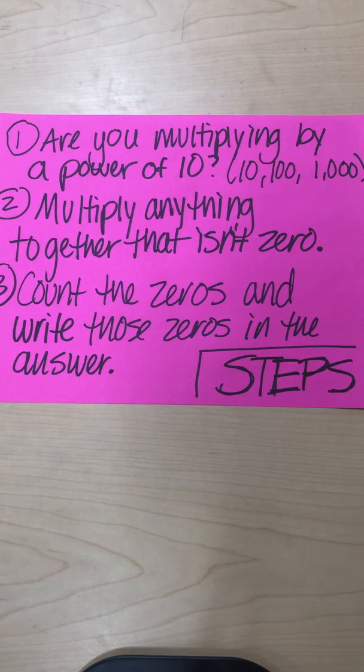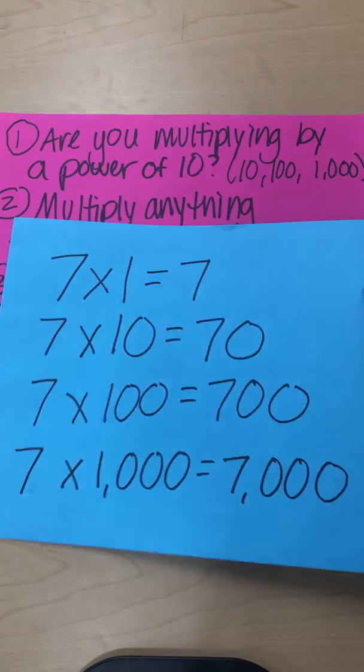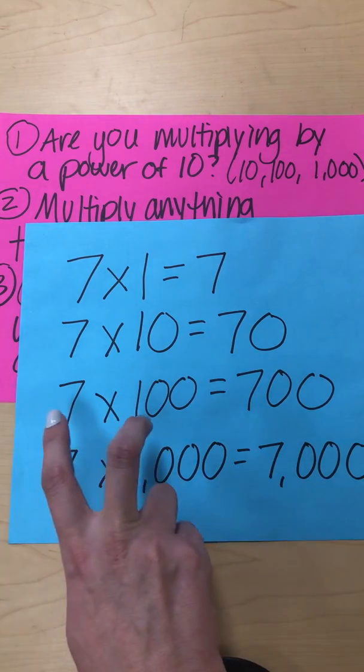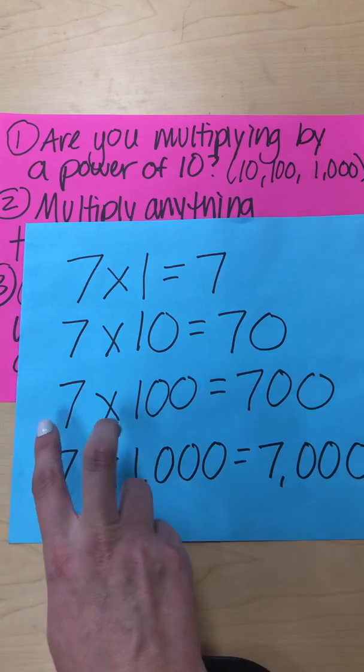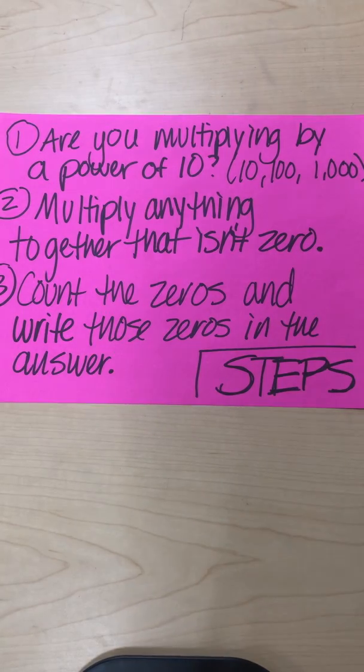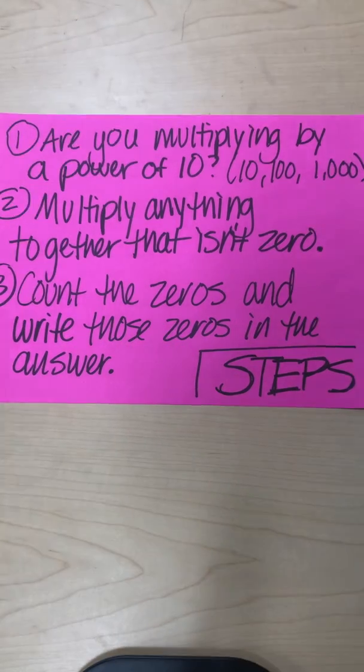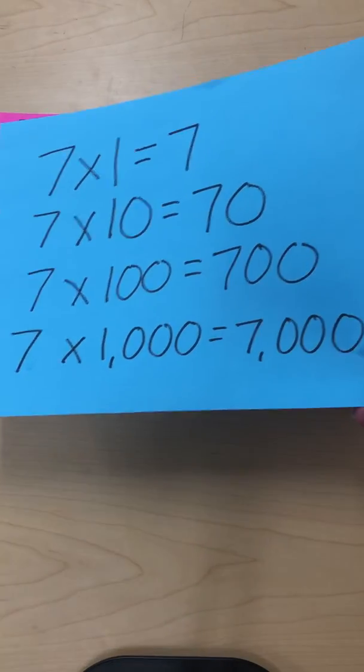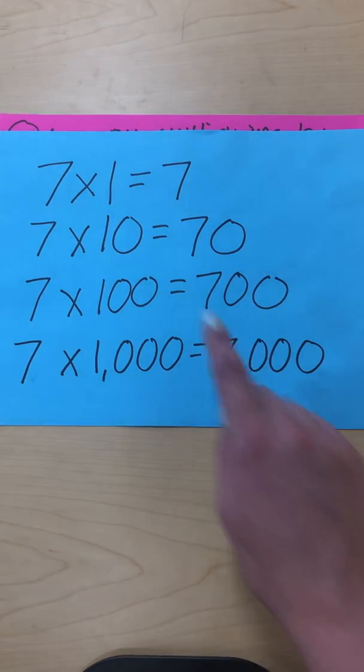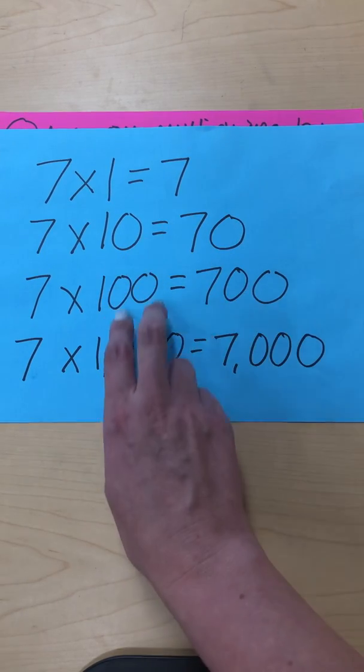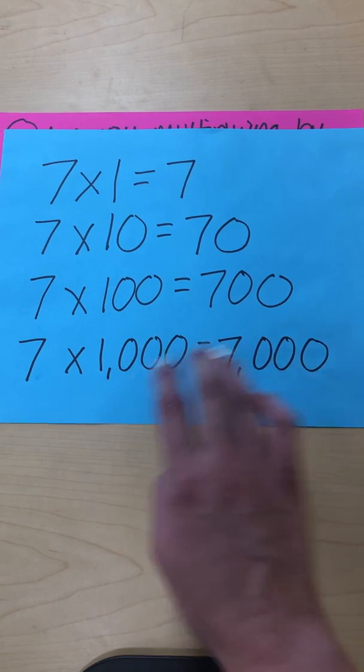Step two to your pattern, once you figure out if you could use the pattern or not, is multiply anything together that isn't a 0. So that's what we did here. We multiplied anything that wasn't a 0 first. Do you see how I'm kind of ignoring the 0s at first? Now this is where you focus on the 0. You're going to count the 0s and write the 0s in the answer. We're not like completely ignoring them. We're going to finally look at them, but at the very end. So this is where you count them, and you write whatever you've multiplied by in the answer.